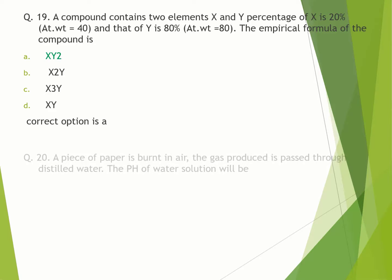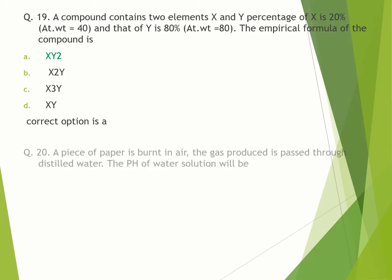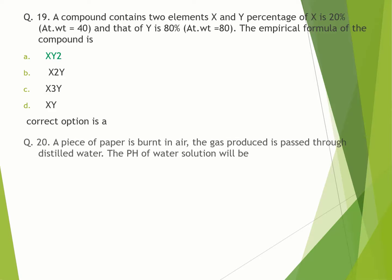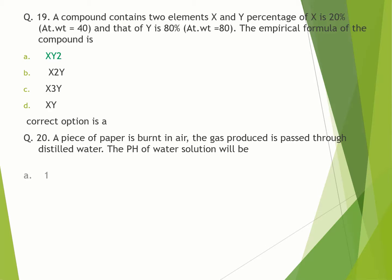Question number 20. A piece of paper is burnt in air. The gas produced is passed through distilled water. The pH of water solution will be: A. 1. B. 7. C. 2.1. D. 6.8. Correct option is D.